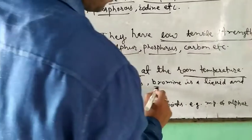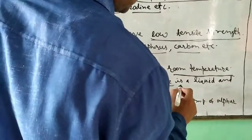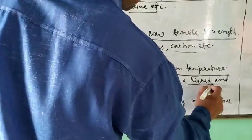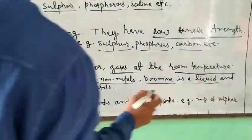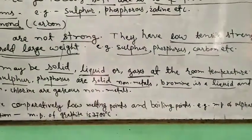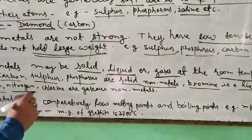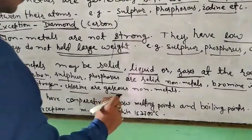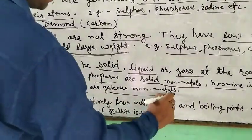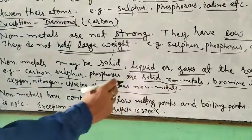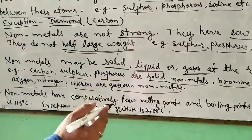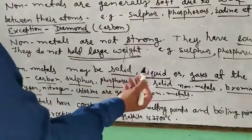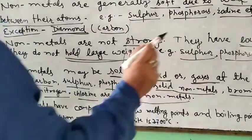Bromine is a liquid non-metal, and oxygen, nitrogen, and fluorine are gaseous non-metals. So we see that non-metals may be solid, liquid, or gaseous.